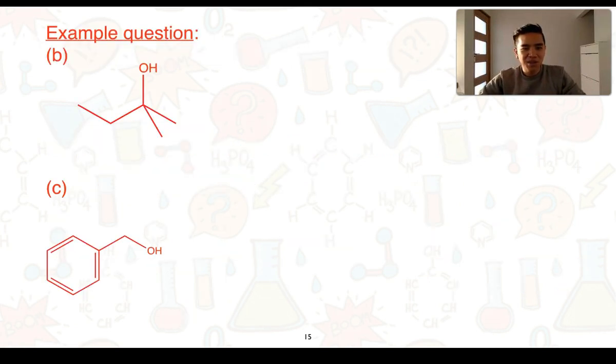Here are our next two examples. So part b again we've got another alcohol and what we can see is that this carbon bonded to the hydroxyl group is bonded to one, two, three other carbon atoms. That makes it a tertiary alcohol. So we already know that tertiary alcohols cannot be oxidized and for part c we've got here a carbon bonded to a hydroxyl group is only then in turn bonded to one other carbon atom.